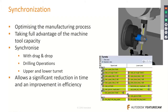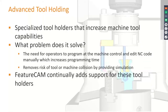FeatureCAM allows perfect synchronization between your manufacturing processes across different spindles and turrets, reducing machining time and improving efficiency. Machine and turret synchronization can be done inside FeatureCAM by simply dragging and dropping — very easy and convenient.